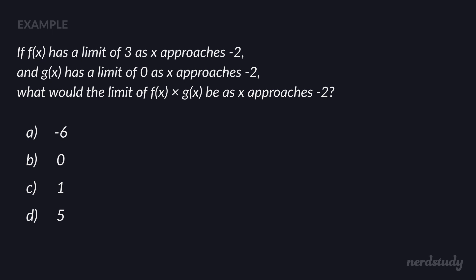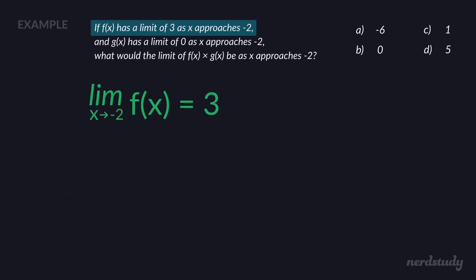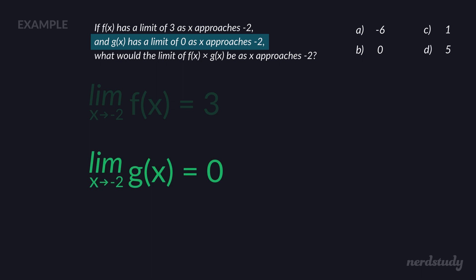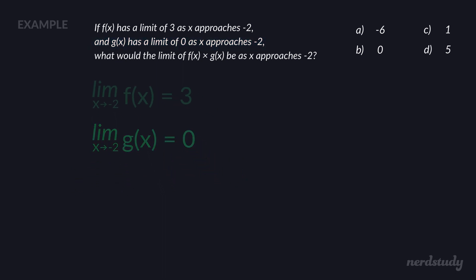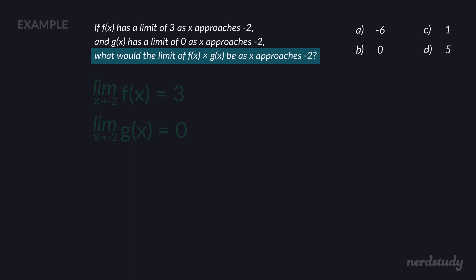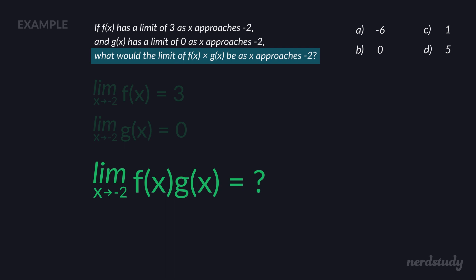Let's understand what we just read. If f of x has a limit of 3 as x approaches negative 2, we can write this mathematically: the limit as x approaches negative 2 for f of x is equal to 3. The second part says the limit as x approaches negative 2 for g of x is 0. The question asks for the limit of f of x multiplied by g of x as x approaches negative 2.